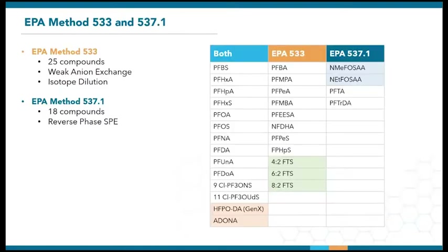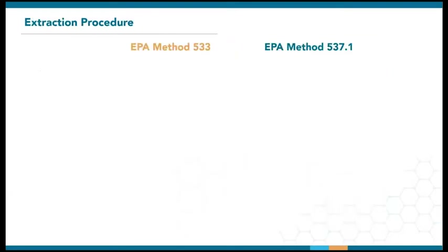Here's a quick comparison of EPA Methods 533 and 537.1. Method 533 uses weak anion exchange with isotope dilution. Method 537.1 does not use isotope dilution and employs reverse-phase SPE. The two methods share a list of 14 analytes, ranging from C4 to C12 carboxylic acids and sulfonic acids. GEN-X and ADONA are also included as they are industrial replacements for PFOA. EPA Method 533 brings an additional eight short-chain compounds and three fluorotelomer acids, which are precursors to other PFAS compounds. EPA Method 537.1 covers two more sulfonamido acids and two long-chain carboxylic acids. Even though these methods employ different extraction chemistry, they share many similarities in the extraction steps.